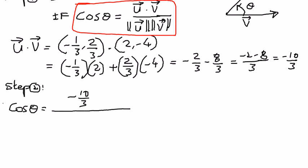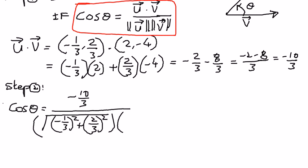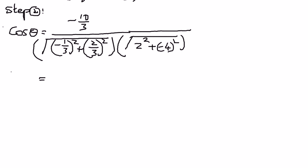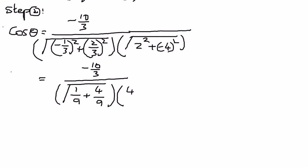So cosine theta equals negative 10 over 3, divided by the square root of negative 1 over 3 squared plus 2 over 3 squared, times the square root of 2 squared plus negative 4 squared. Simplifying the magnitudes: negative 1 over 3 squared is 1 over 9, and 2 over 3 squared is 4 over 9, under the radical symbol. For vector v: 2 squared is 4, and negative 4 squared is 16, under the radical symbol.